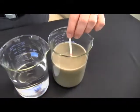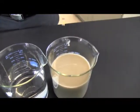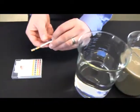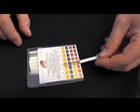Next remove a new pH strip from the package and dip it into the bentonite drilling fluid. Again compare it to the chart. This bentonite drilling fluid has a pH of between 9 and 10.